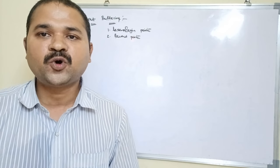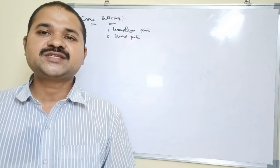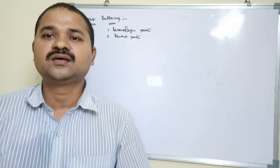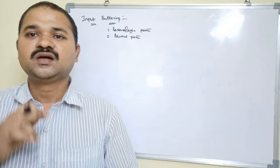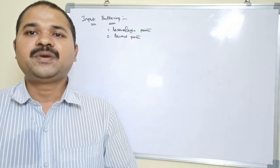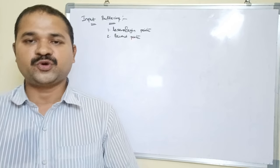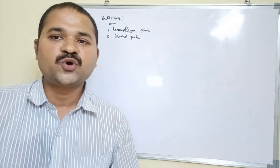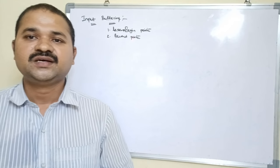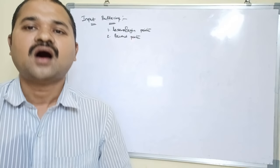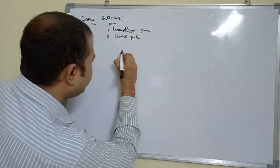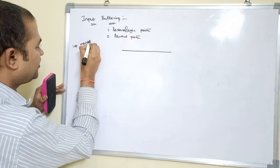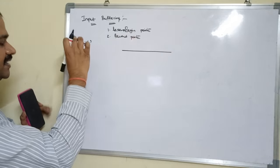A pointer points to a variable — that means a pointer stores the address of a variable. Whenever a program is saved, it is stored in the hard disk. During compilation the program also resides in the hard disk, but at the time of execution the program is placed in main memory, because the CPU can execute a program only when it is available in main memory. During compilation the program resides in the hard disk; let the program contain a statement like int main() {}.